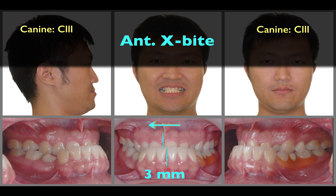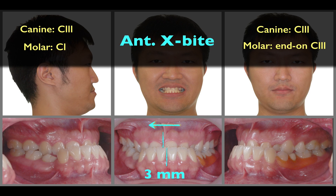The bilateral canine relationship was Class 3. The right molar relationship was Class 1, but the left molar relationship was end-on Class 3.